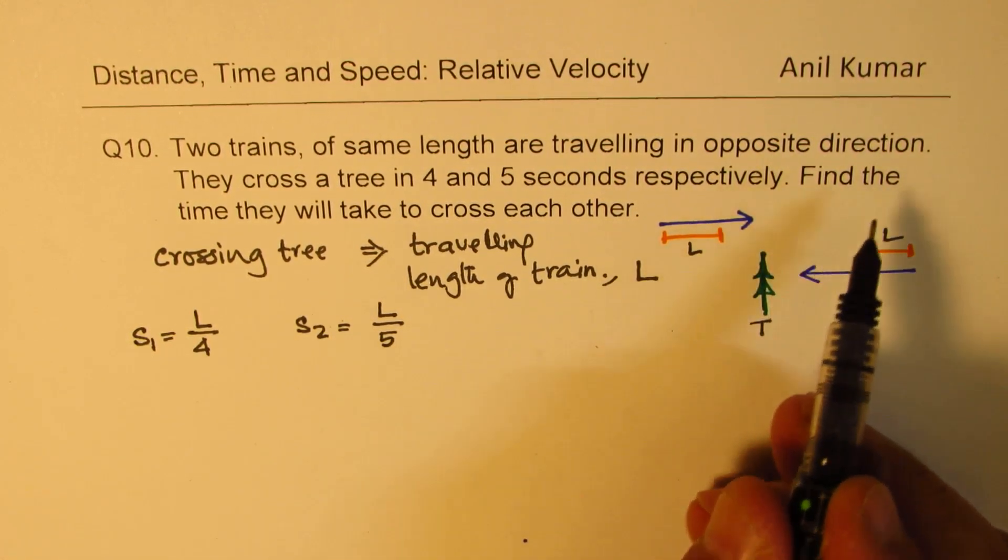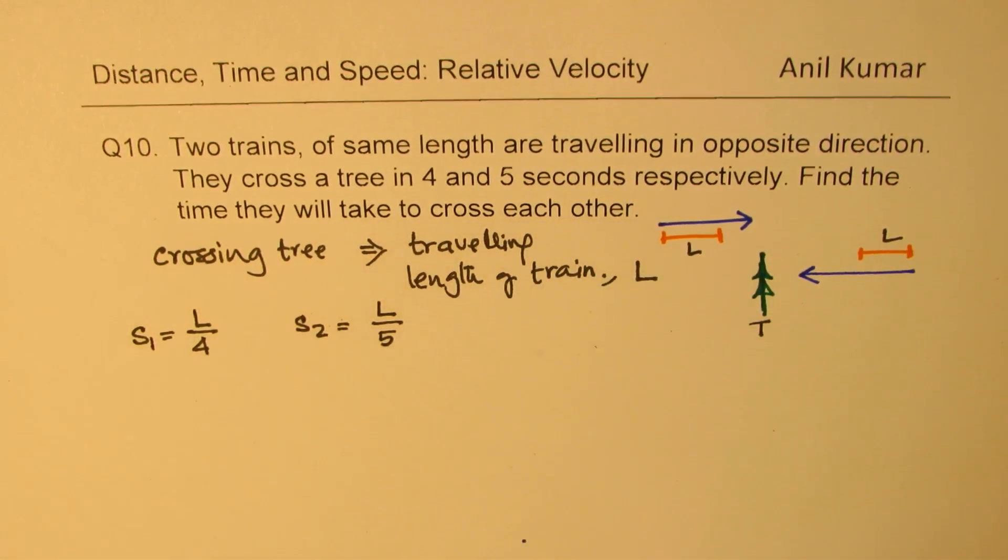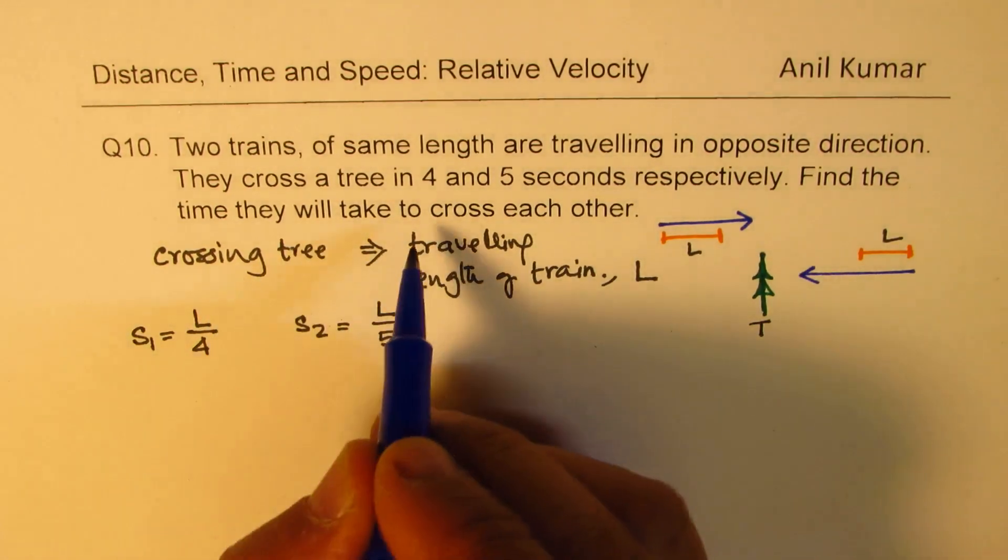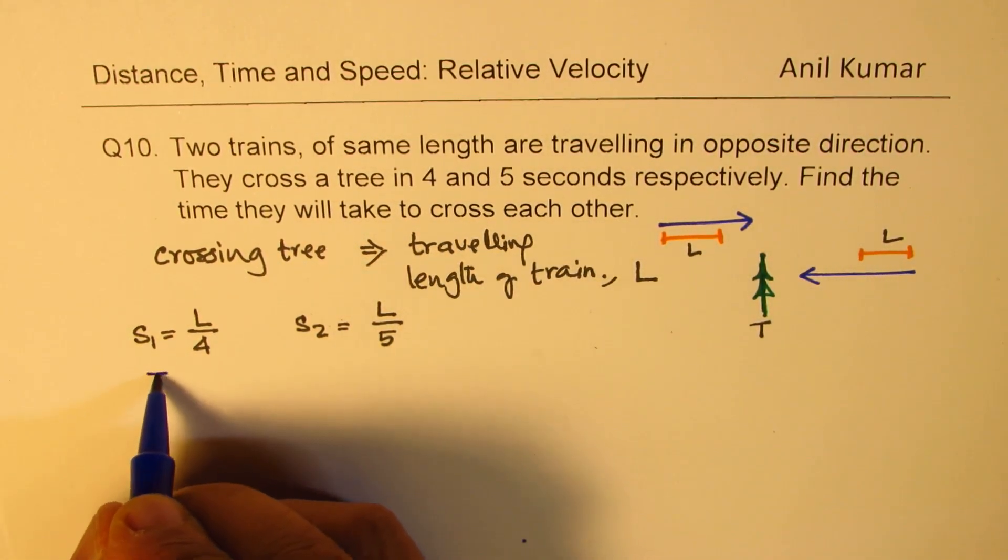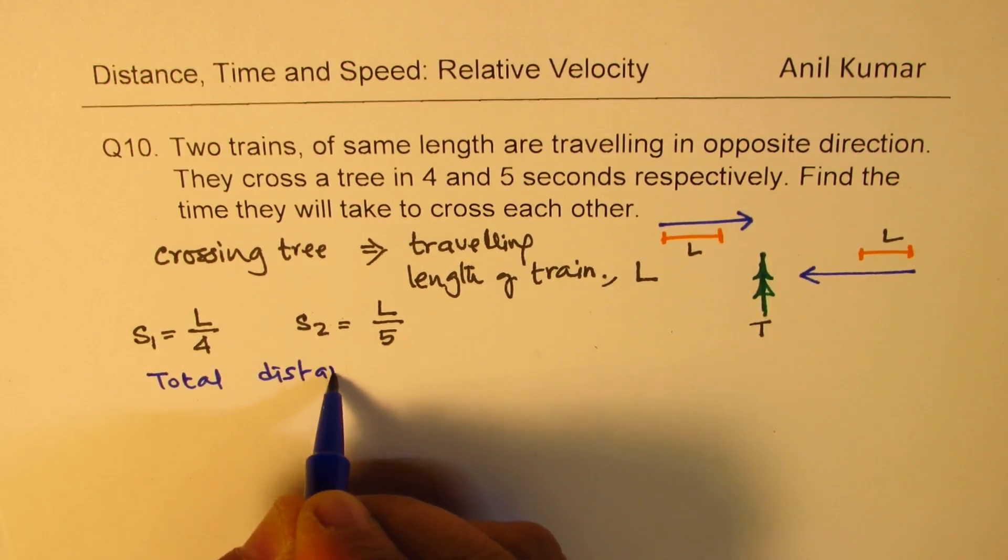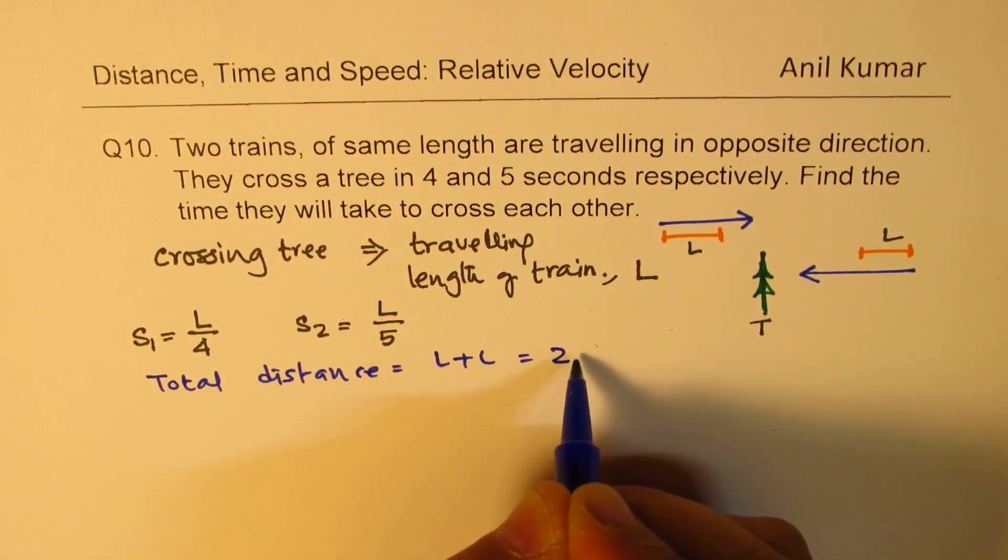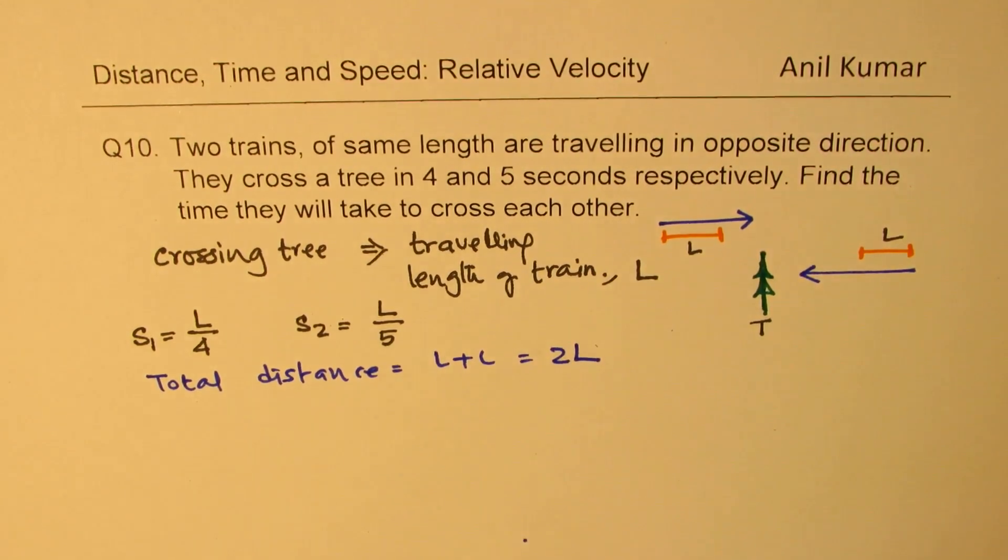And when we say find the time they will take to cross each other, so when they are crossing each other means what? That means total length or total distance will be how much? L plus L, which is 2L. So total distance is 2L.